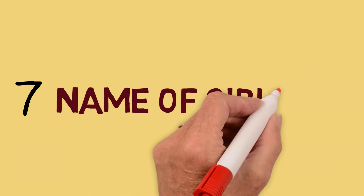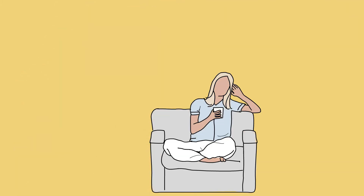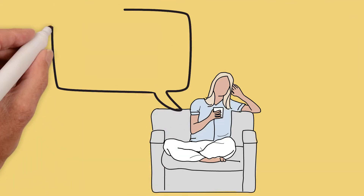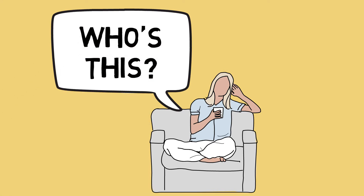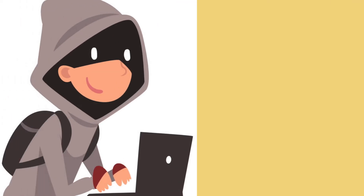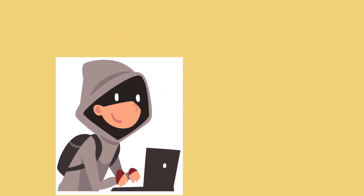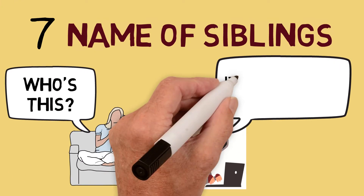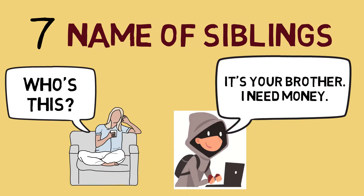Number seven is the name of your siblings. Disclosing this is actually a huge risk — strangers may pretend or use their identity to dupe you. So again, make sure not to disclose the names of your siblings.